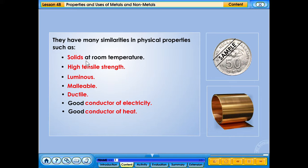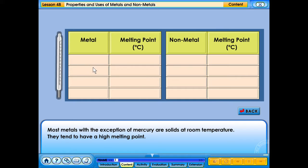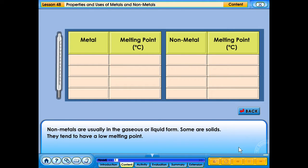Most metals, with the exception of mercury, are solids at room temperature. They tend to have a high melting point. Non-metals are usually in the gaseous or liquid form. Some are solids. They tend to have a low melting point.